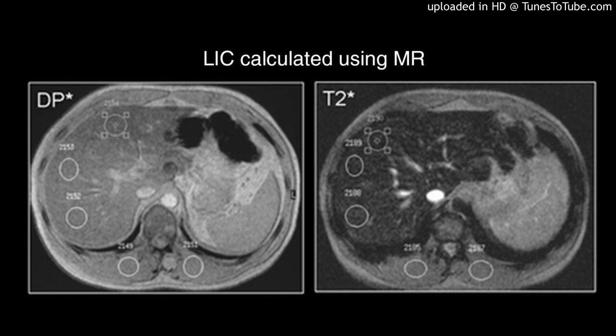Objectives: Organ-specific hemosiderosis and iron overload complications are more serious and more frequent in some patients with beta-thalassemia major (BTM) compared with others. We investigated whether co-inheritance of HFE H63D or C282Y gene mutations in patients with BTM contributes to the phenotypic variation of iron overload complications.